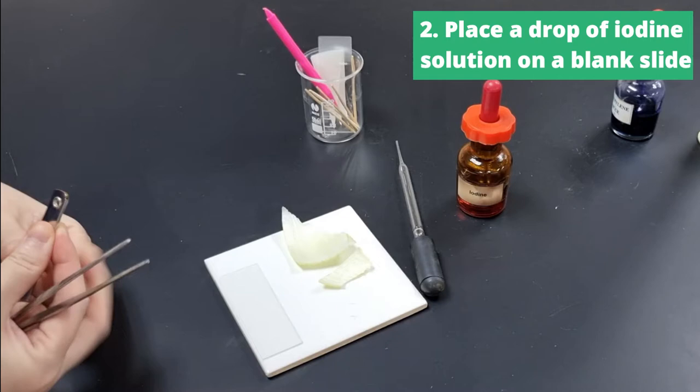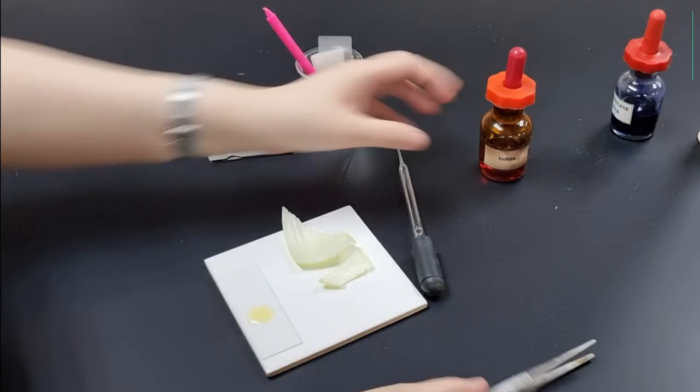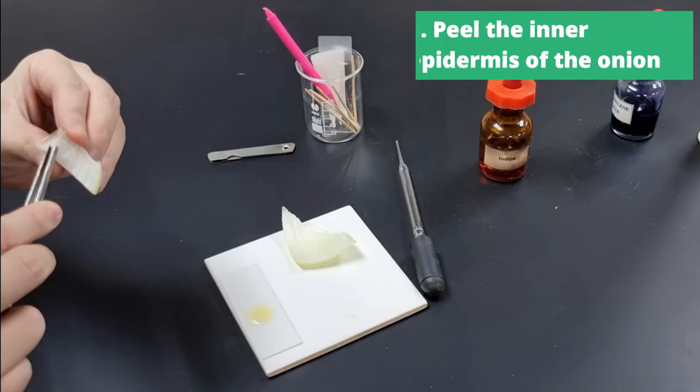We're going to take a blank slide here and place a drop of iodine solution onto the blank slide. So just a drop will do, just a tiny amount, and then now we're ready to peel the inner epidermis.